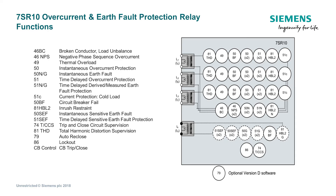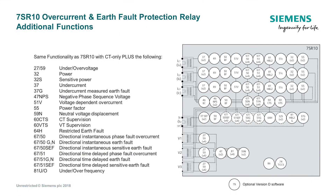In terms of protection functionality, the 7SR10 provides three phase overcurrent and both measured and calculated earth fault. Therefore the relay can provide phase overcurrent, earth fault and sensitive earth fault in one device. With the addition of voltage transformers, the 7SR10 not only provides directional overcurrent and earth fault, but a number of additional functions. These include under and over voltage, under and over frequency, and directional power protection.